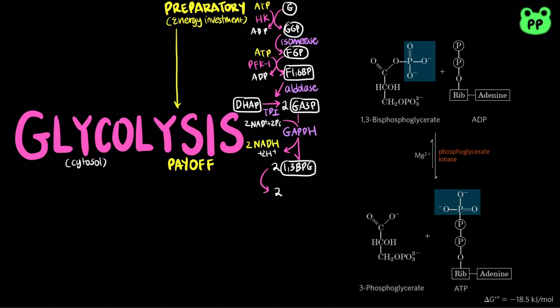Next, the enzyme phosphoglycerate kinase transfers the high-energy phosphoryl group from the carboxyl group of 1,3-bisphosphoglycerate to ADP, forming ATP and 3-phosphoglycerate. Note that phosphoglycerate kinase is named for the reverse reaction. The formation of ATP by phosphoryl group transfer from a substrate like 1,3-bisphosphoglycerate is referred to as substrate-level phosphorylation.